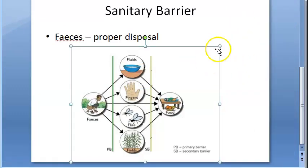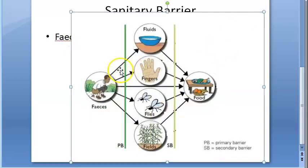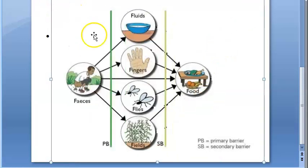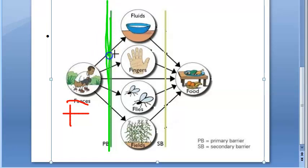Look at this diagram here. What are you able to understand from this? Basically feces is here, this is the red. And then there is a primary barrier here. This primary barrier they have shown in green. This is a primary barrier which is protecting what and all?